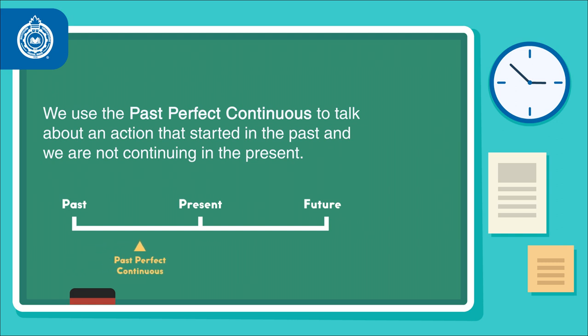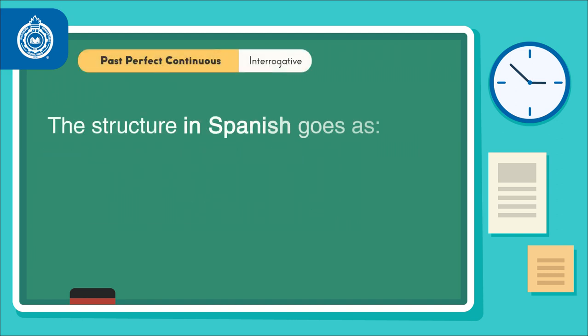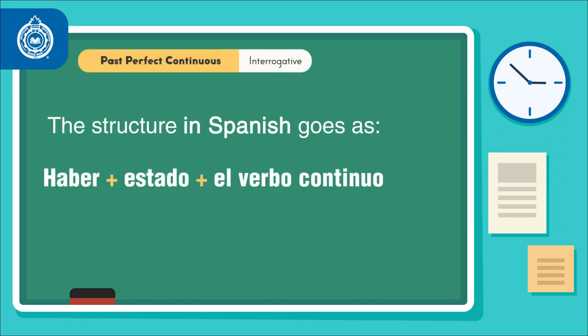Now let us contrast it with Spanish. The structure goes as: haber conjugado de acuerdo con el sujeto, más estado — el participio pasado de estar — más el verbo continuo: -ando, -endo.